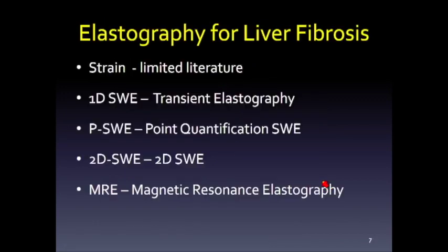There are several methods of assessing liver fibrosis. Strain elastography is very limited in the literature and won't be discussed here. There are three ultrasound techniques: 1D ultrasound using a mechanical push or transient elastography; two ARFI techniques — point shear wave and 2D shear wave; and magnetic resonance elastography, which also won't be covered today.